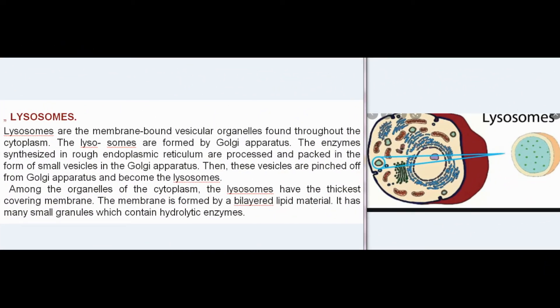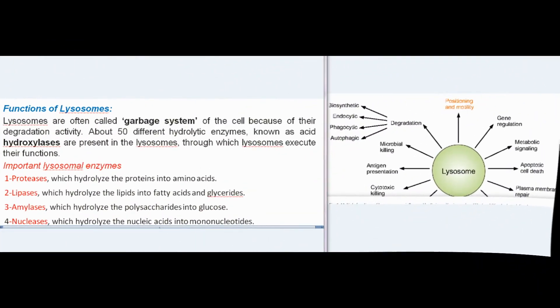Lysosomes are membrane-bound vesicular organelles found throughout the cytoplasm, formed by the Golgi apparatus. Enzymes synthesized in the rough endoplasmic reticulum are processed and packed in the Golgi apparatus into small vesicles, which are pinched off to become lysosomes. Among cytoplasmic organelles, lysosomes have the thickest covering membrane, formed by bilayer lipid material. They contain many small granules with hydrolytic enzymes. Lysosomes are often called the garbage system of the cell because of their degradation activity, containing about 50 different hydrolytic enzymes known as acid hydrolases.